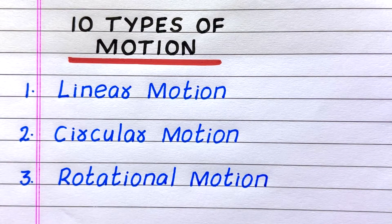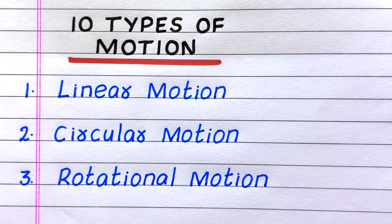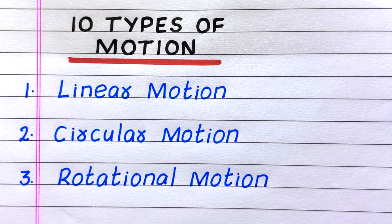The first type of motion is linear motion, second is circular motion, third is rotational motion.